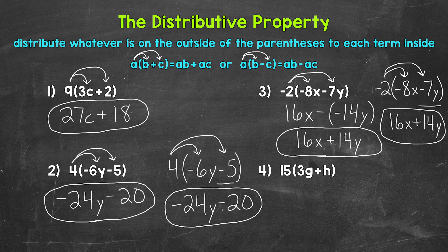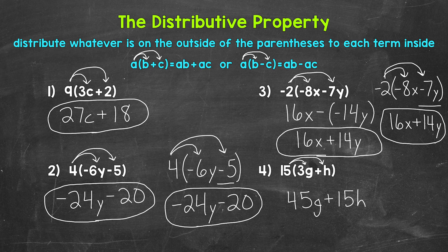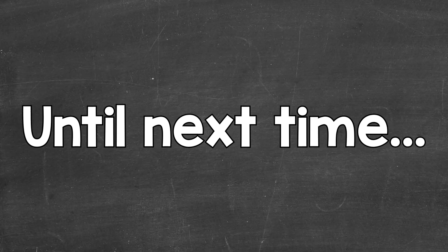Lastly, let's move on to number 4 where we have 15 and then 3g plus h in the parentheses. Let's distribute that 15 to the 3g and to the h. So we have 15 times 3g, which gives us 45g, plus 15 times h, which is just 15h. So we end up with 45g plus 15h. We don't have any like terms that we can combine, so we can't simplify this any further. This is simplified — 45g plus 15h. So there you have it, that's how to simplify algebraic expressions by using the distributive property. I hope that helped. Thanks so much for watching. Until next time, peace.